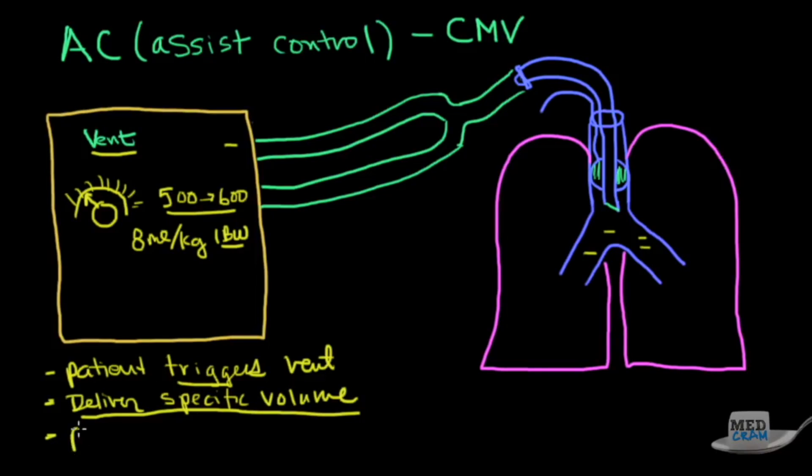The ideal way of ventilating somebody would be around 8 milliliters per kilogram ideal body weight. Whatever that volume is, it's going to deliver that specific volume in AC mode ventilation. Now, the patient can trigger it. You could also set up a backup mode or a rate. What does that mean? If I set the rate to, for instance, 12, because there are 12 five-second intervals in one minute, that means every five seconds the ventilator will give a breath to the patient of a specific volume only if the patient does not take a breath.